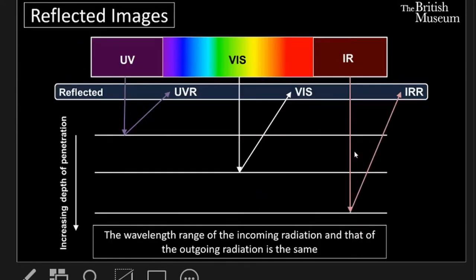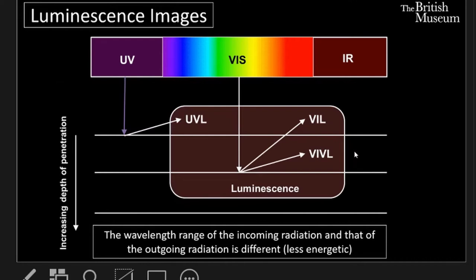With this setup we can collect two types of images: reflectance images, where the wavelength range of the incoming and outgoing radiation is the same — so these are visible UV reflected and infrared reflected images and we can create associated false colour images — and luminescence images, where the wavelength range of the incoming and the outgoing radiation is different.